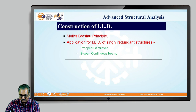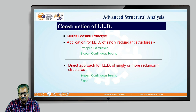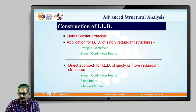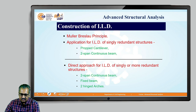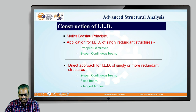For multi-redundant structures, we have to resort to some other technique — the direct approach for ILDs of highly redundant structures. When I say more redundant, it could be dual redundant, redundancy of 3, redundancy of 4, and so on. Under this category, we can focus on two-span continuous beams, fixed beams, and two-hinged arches.